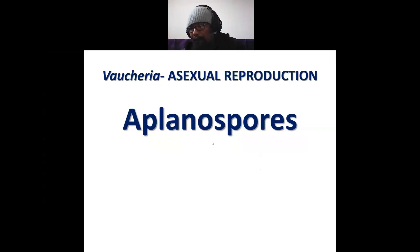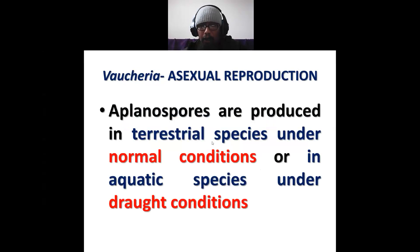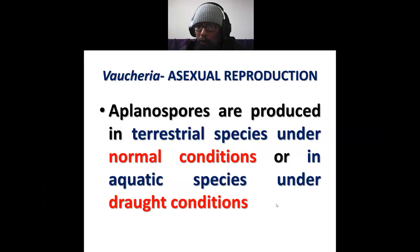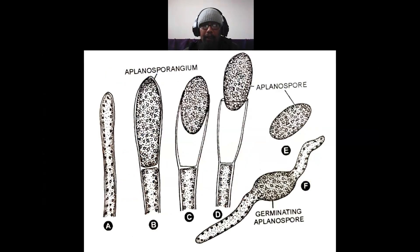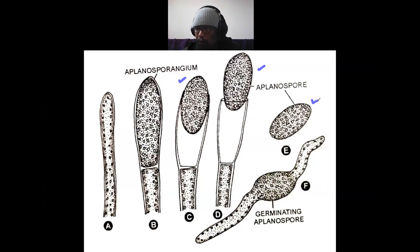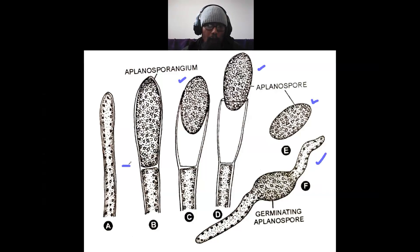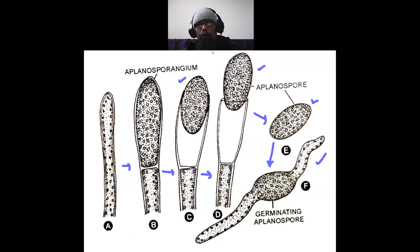Aplanospores are formed in terrestrial species under normal conditions, or in aquatic species under drought conditions. These are large, massive, non-flagellated, and multi-nucleate structures. This is the diagram you have to draw while explaining aplanospore formation.